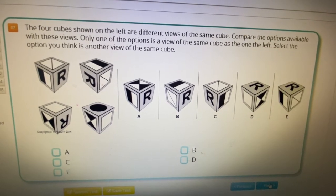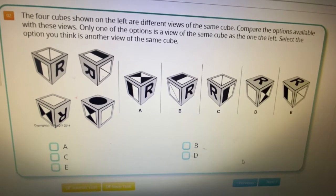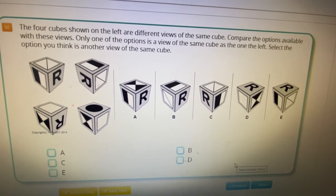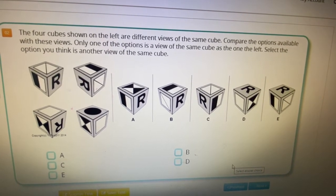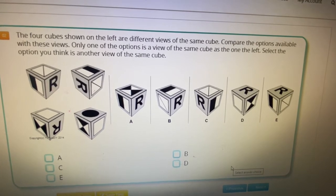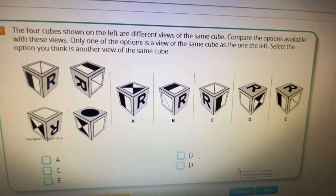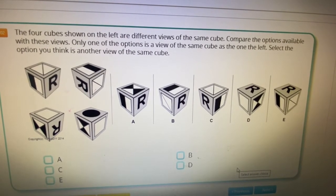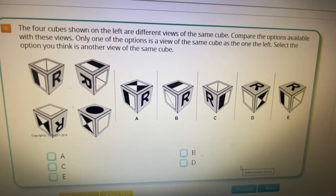Lemel, would you explain this one? Okay. If you read the question. The four cubes shown on the left are different views of the same cube. Compare the options available with these views. Only one of the options is a view of the same cube as the one on the left. Select the option you think is another view of the same cube. Just looking at it, do you know what the answer is? The answer is D.